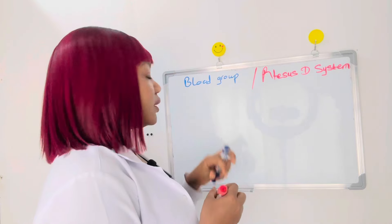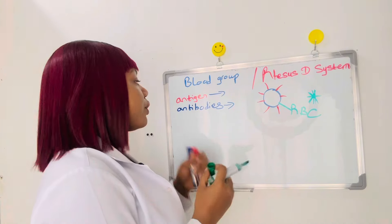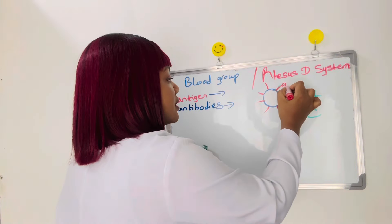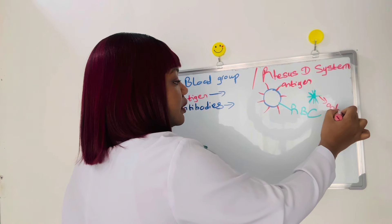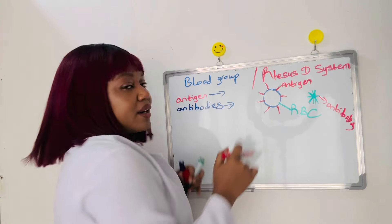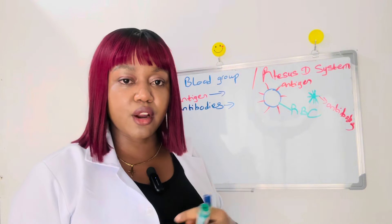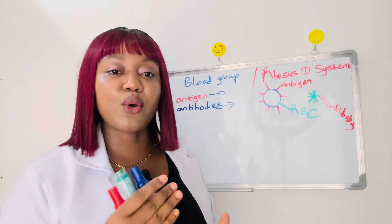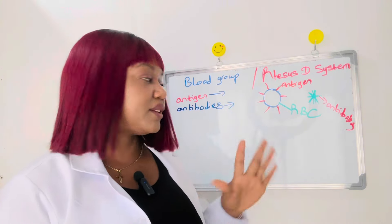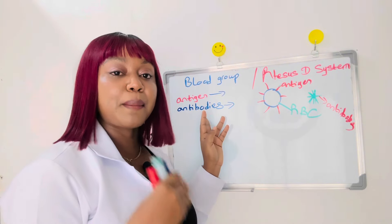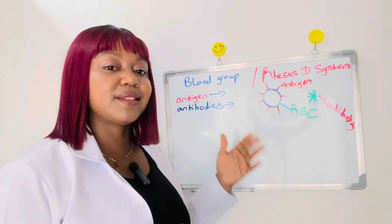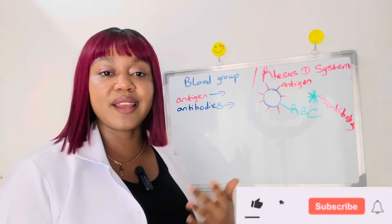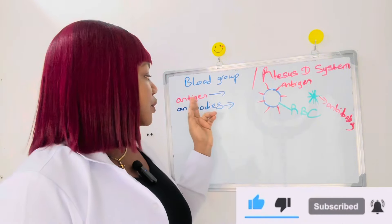Before getting into that, let me explain what blood group is. On our red blood cells you have substances known as antigens — these are the antigens present on the cell. An antigen is any foreign substance in the body; it could be a virus, a microbe, or a bacteria — anything not normally supposed to be in the body is considered a foreign particle, known as an antigen. An antibody is the protein present in the plasma which helps to fight antigens. In layman's terms, antibodies are like soldiers present in the body to fight any infection or foreign substance.